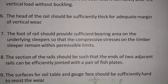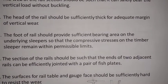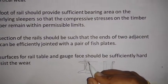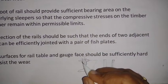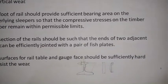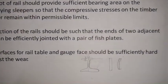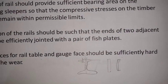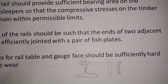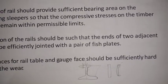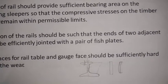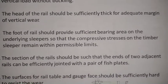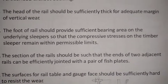The head of the rail should be sufficiently thick for an adequate margin of vertical wear. The head should be sufficiently thick to resist all vertical loads acting without any deformation. Next, the foot of the rail should provide sufficient bearing area on the underlying sleepers so that the compressive stresses on timber sleepers remain within permissible limits.